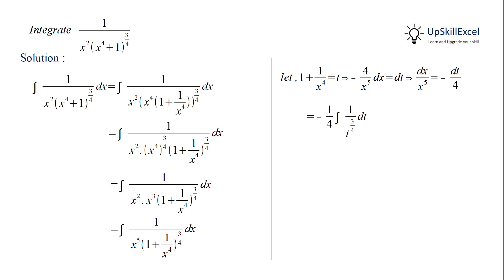So our integral becomes -1/4 times the integral of 1/t^(3/4) dt.